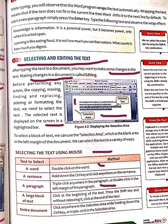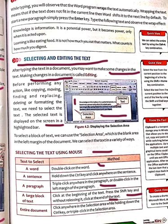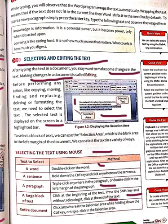To select a large block of text, click at the beginning of the text where it starts, then press the Shift key and without releasing it, click at the end of the text. That entire large block of text will be selected. So click at the beginning, press Shift, hold it down, and click at the end — the whole block gets selected.